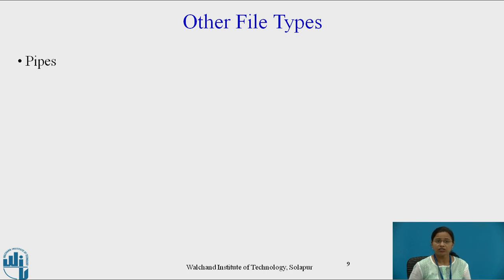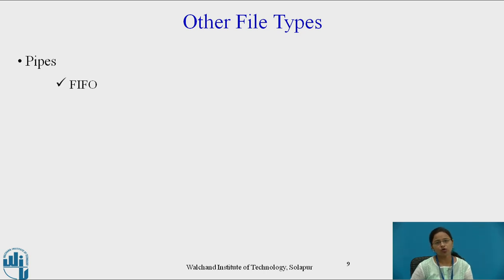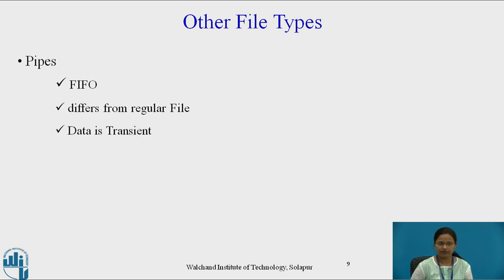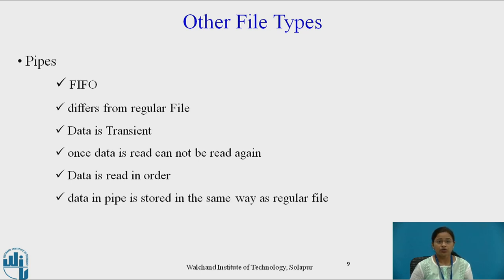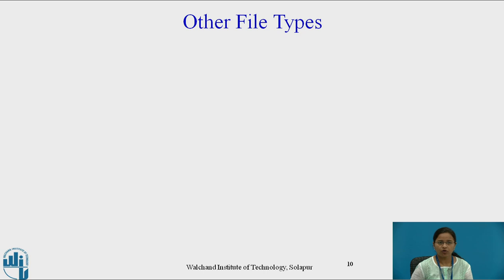Now, there are other file types present in Unix. There are two types: one is pipes and the second is special files. Pipes are also called first-in, first-out. Pipes differ from regular files because data is transient — once data is read, it cannot be read again. Data is read in order in pipes. Data in a pipe is stored in the same way as it is stored in a regular file.